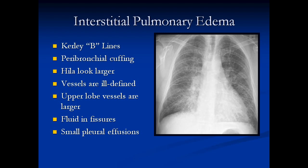Going further, we start to see more lines and different things. We get Kerley B lines — these perpendicular lines due to fluid in the intralobular septa of the lung. We get peribronchial cuffing, which you can see in the hilar regions, and we get fluid in the fissures. All the hila are big, the vessels are ill-defined and indistinct. This is interstitial pulmonary edema.